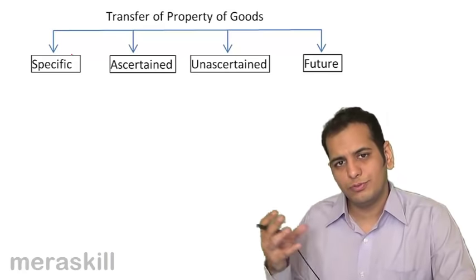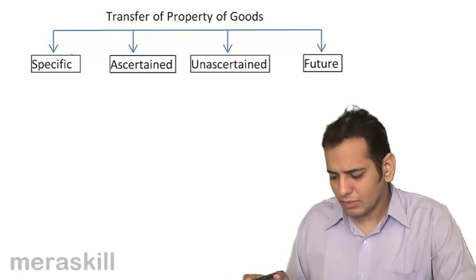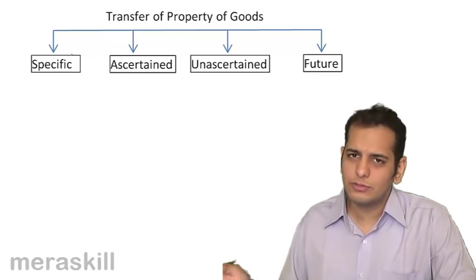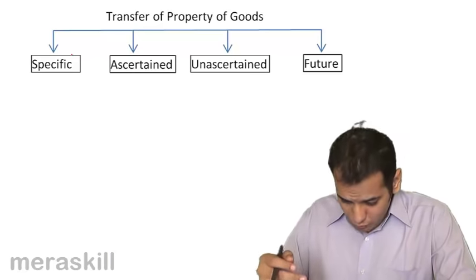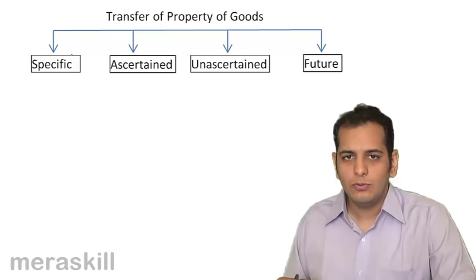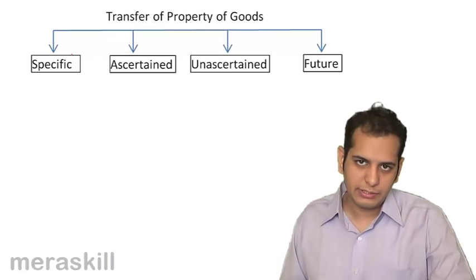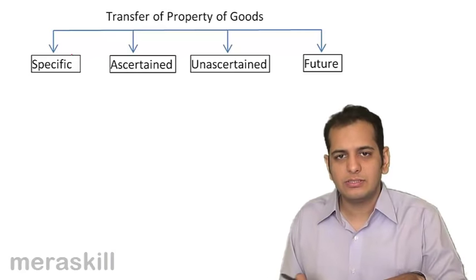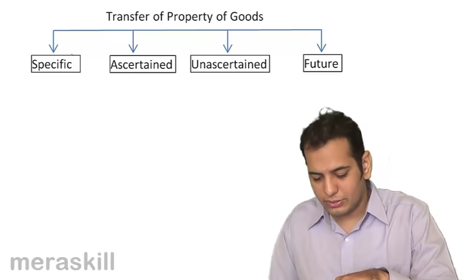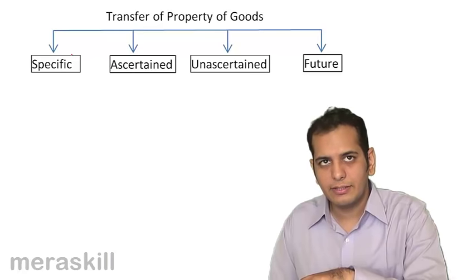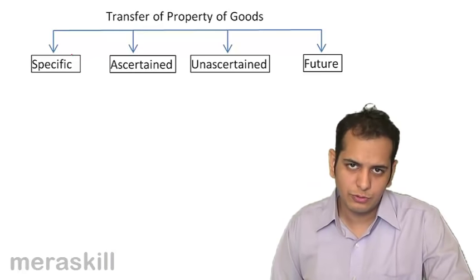The law provisions for future and contingent goods are the same — whatever applies to future goods also applies to contingent goods. So effectively we have four sets of provisions: relating to specific goods, ascertained goods, unascertained goods, and future goods.